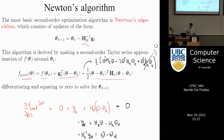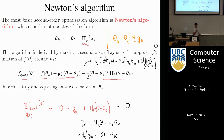Newton's algorithm contrasted with gradient descent: gradient descent says theta_{k+1} = theta_k - eta * g_k, where g_k is the gradient. Newton's method replaces eta with a whole matrix — the Hessian inverse — which tells you how fast to go in each theta direction. In 2D, it tells you how fast to go in the x direction and how fast in the y direction.